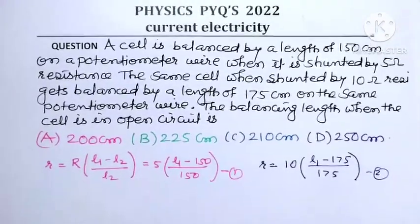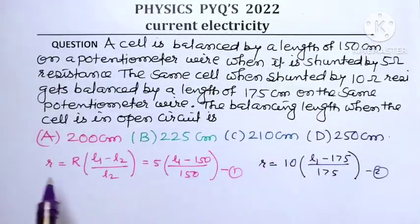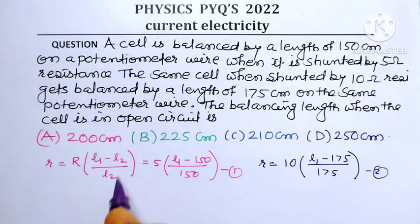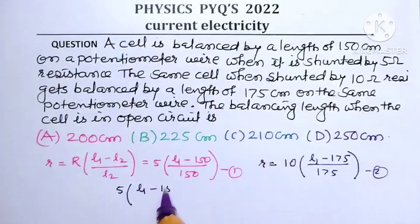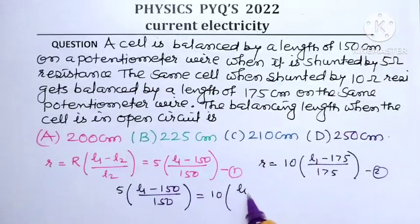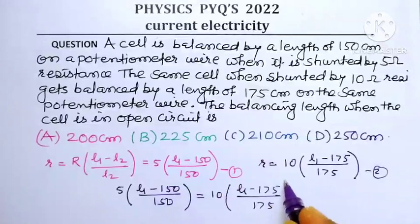So equation 1 and equation 2, their LHS is the same. That is the internal resistance of the given cell. So we can equate the RHS. What we will get is 5 in bracket L1 minus 150 divided by 150, and that is equal to 10 in bracket L1 minus 175 divided by 175.